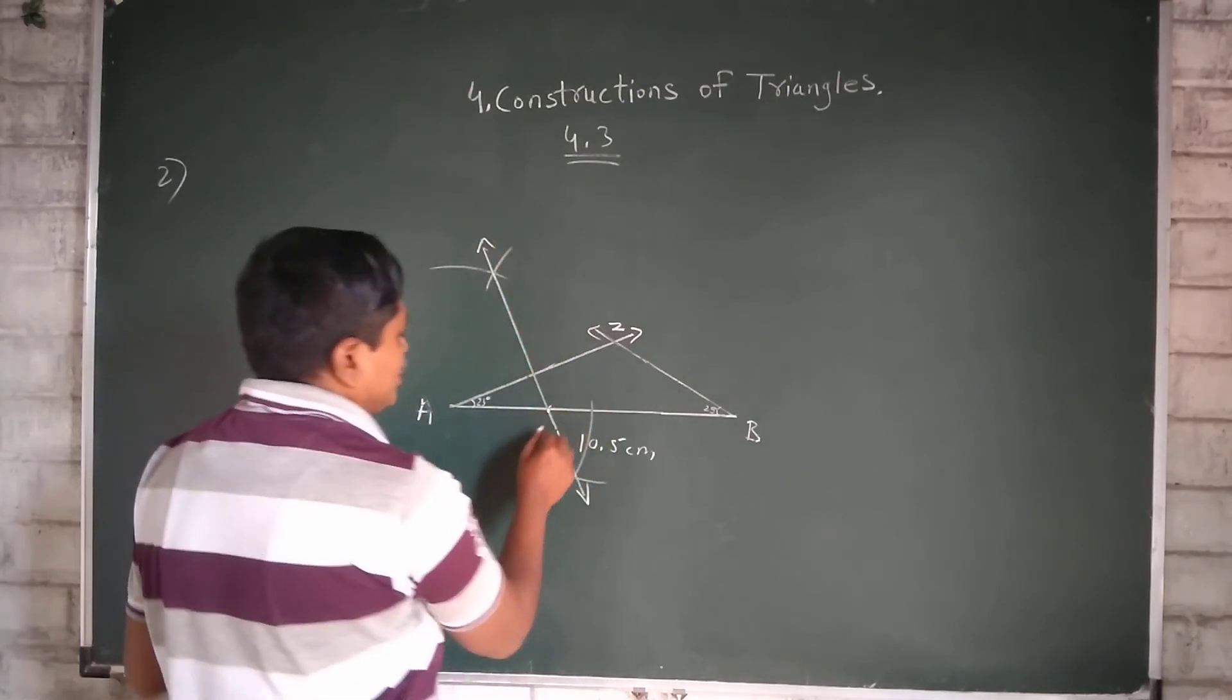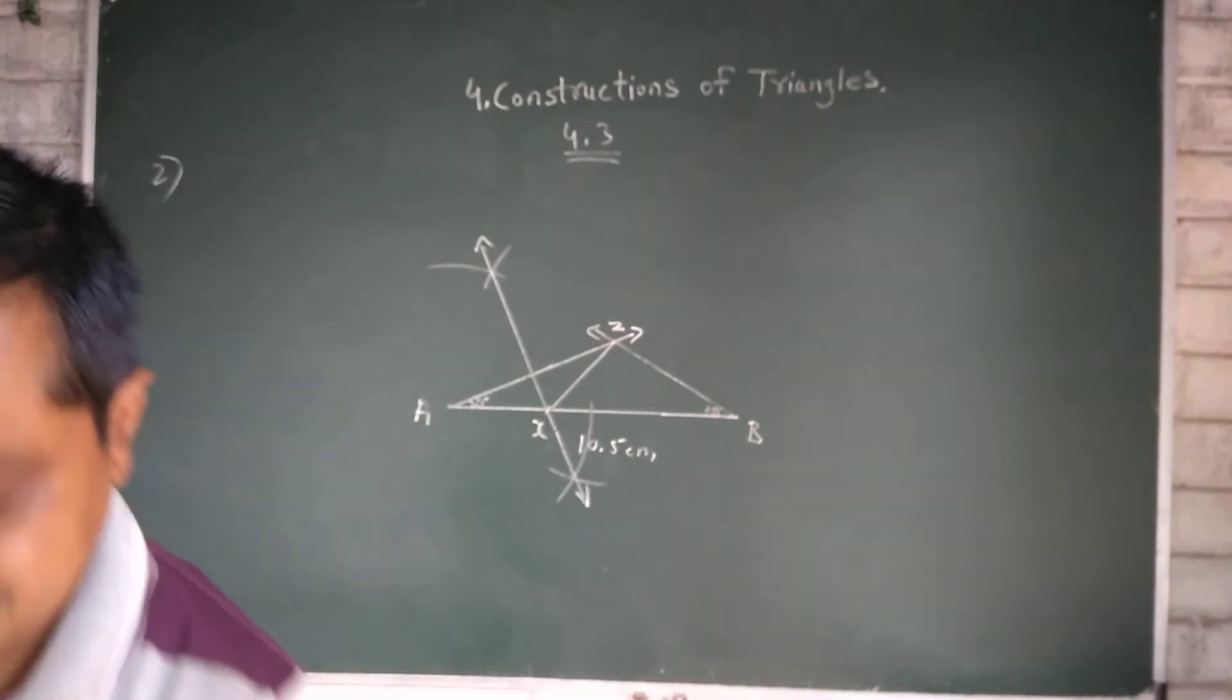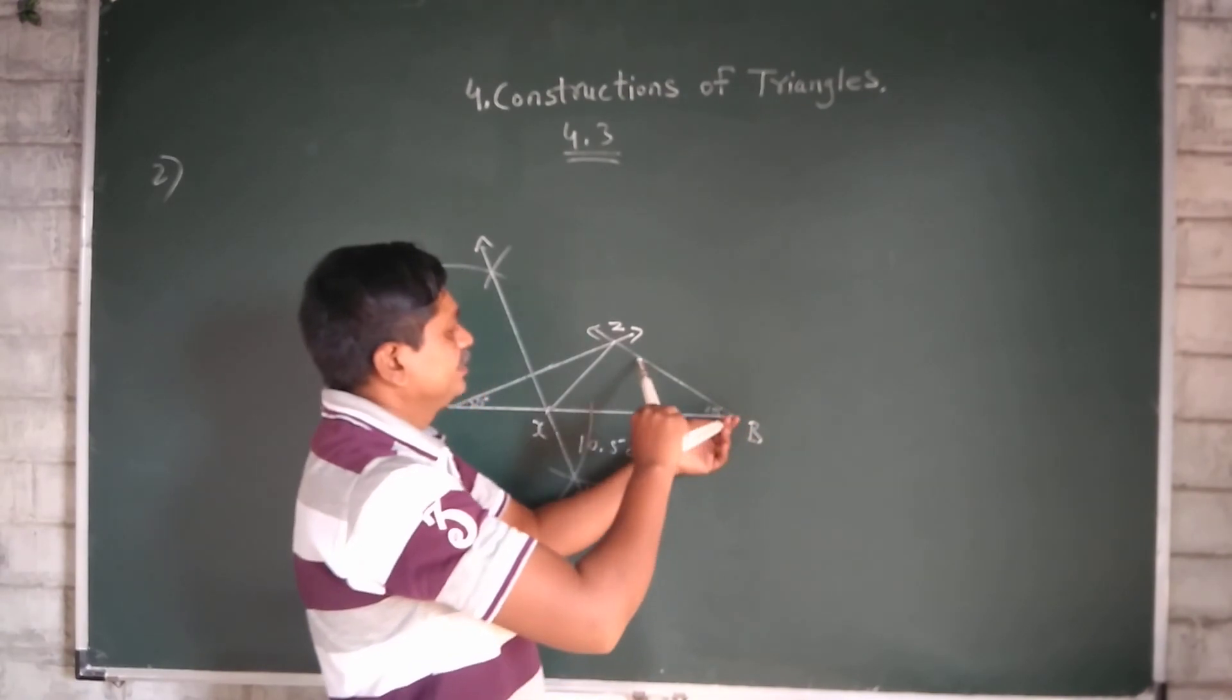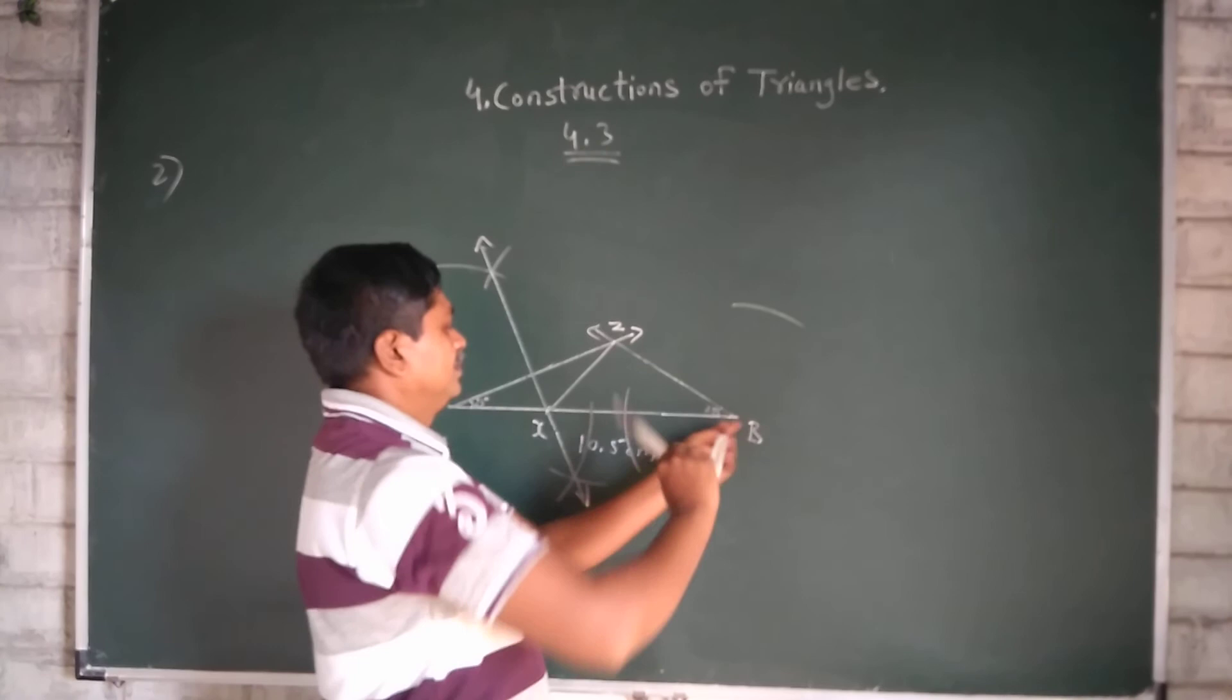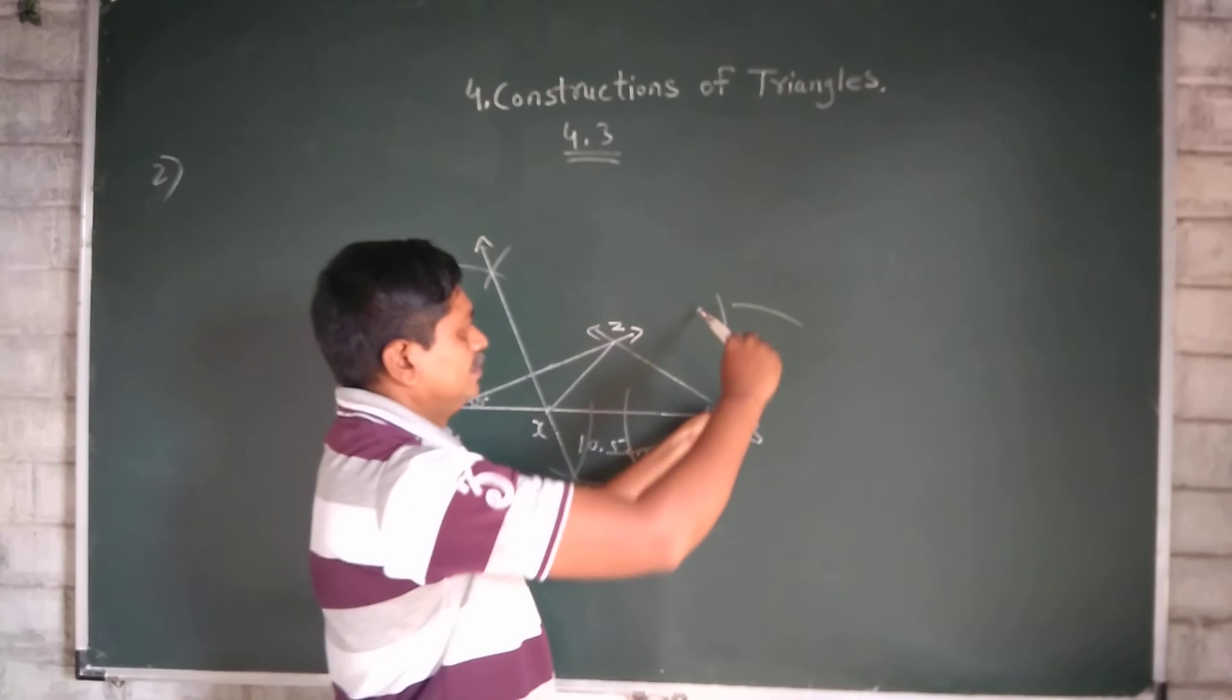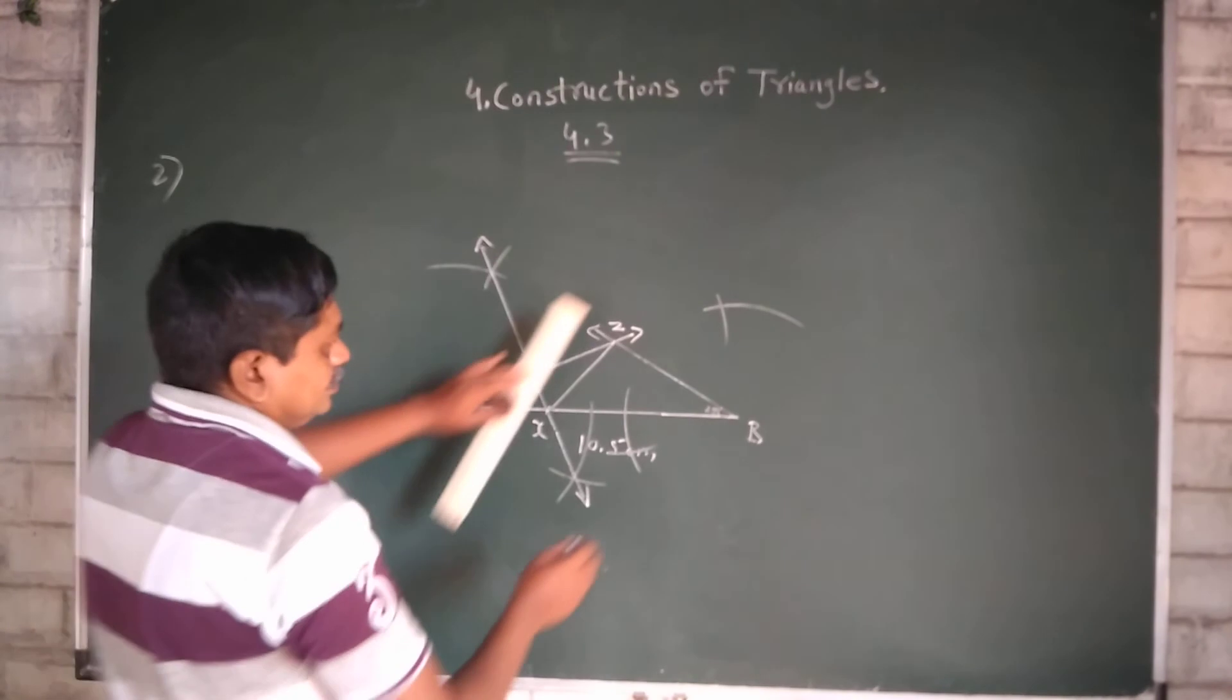This point X. Join ZX. Then we will bisect.